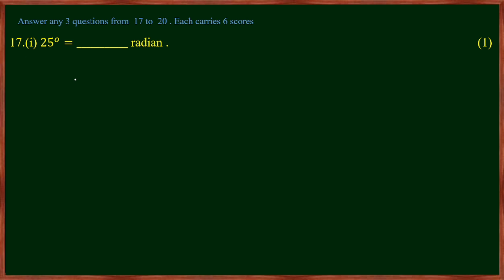First question: how many radians is 25 degrees? The answer is 5π by 36.